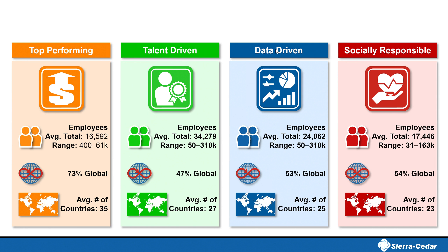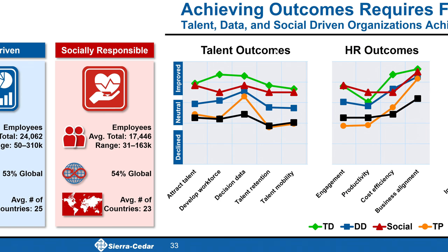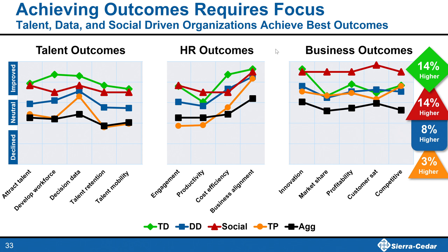This slide shows some averages for the types of organizations in each category. For example, 47% of talent-driven organizations were global organizations, with employees in 27 different countries on average. When we compared all of these organizations against whether their talent, HR, and business outcomes had gone up or down in the past 12 months, we found that outcome-based organizations consistently had better outcomes in talent, HR, and long-term business areas such as the ability to increase market share, innovation, or customer satisfaction. These organizations also had consistently higher financial metrics in key areas and better HR relationships with their business leaders.